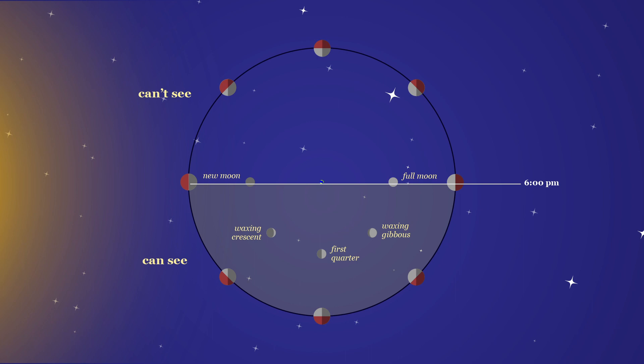At 6 p.m., we note the waxing crescent, first quarter, and waxing gibbous can be easily seen, and the new moon and full moon partially seen.